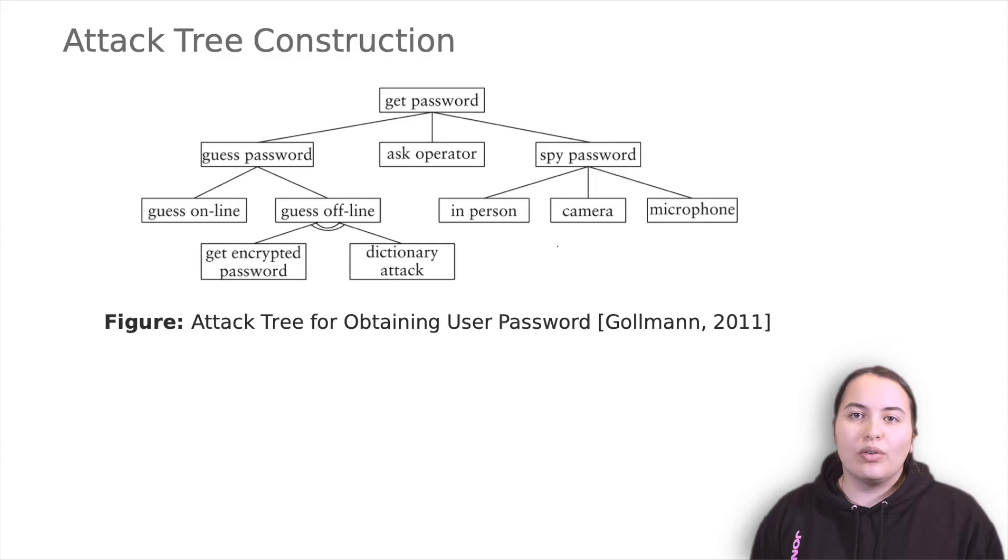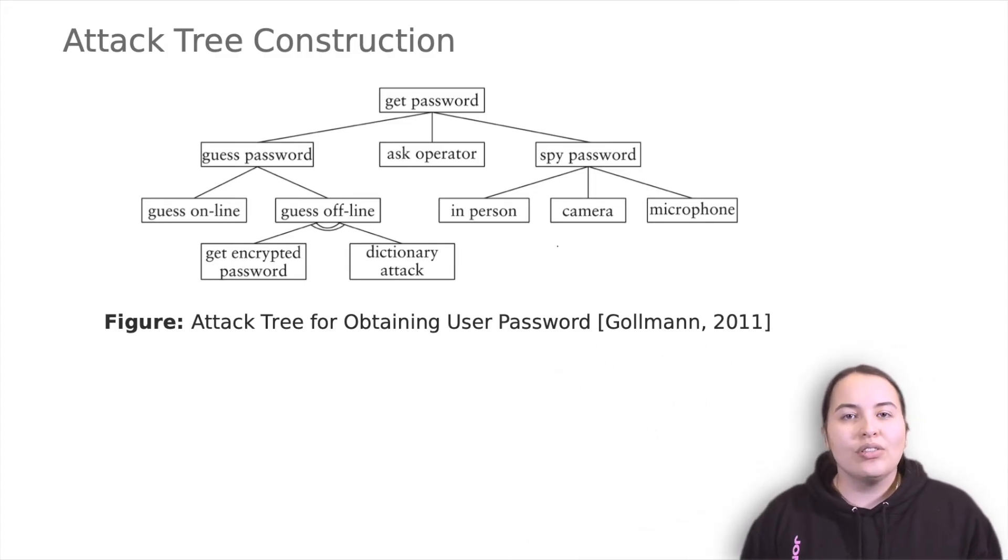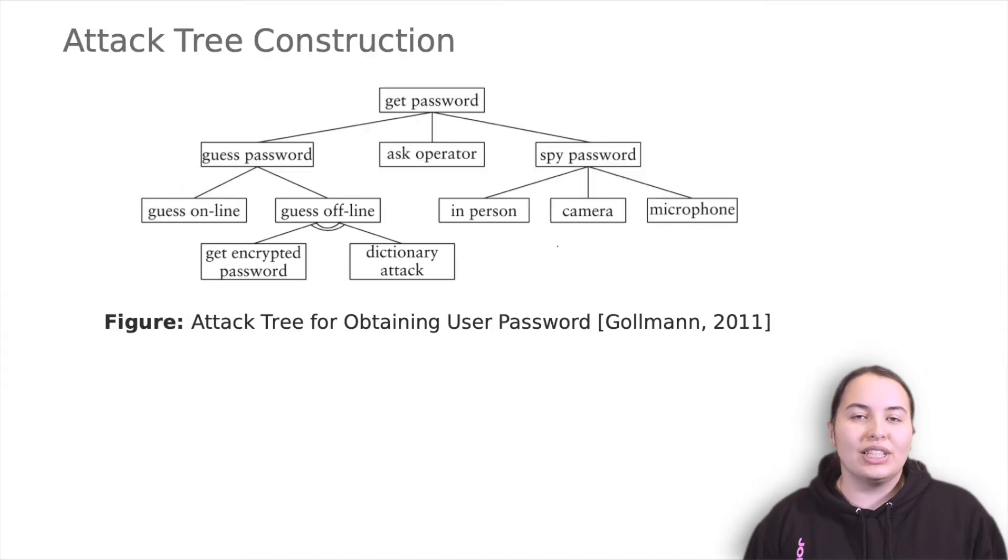Then we decompose the overall goal into sub-goals. Continue the stepwise decomposition into smaller and smaller tasks. The completed diagram of attacks and sub-attacks is called an attack tree. As you can see here, AND connections are marked different in the tree.